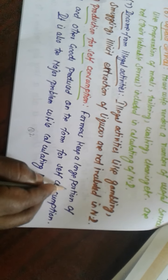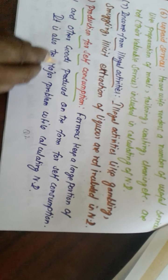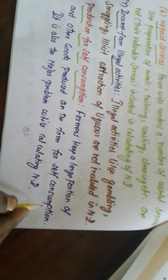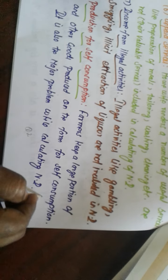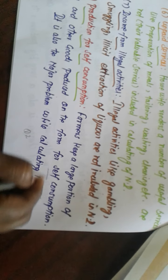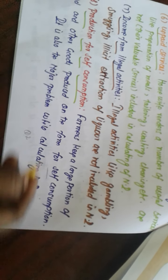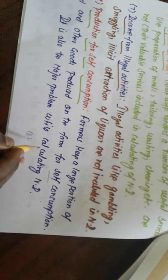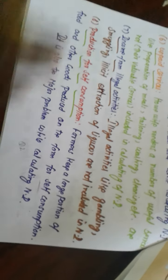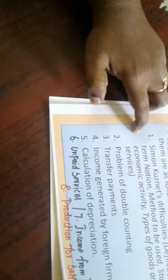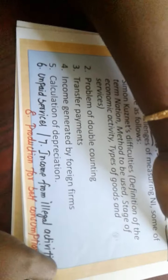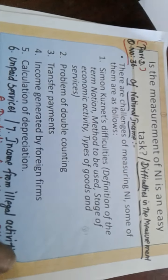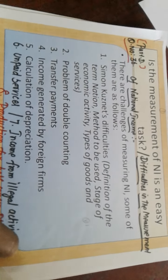Farmers keep a large portion of food and other goods produced on the farm for self-consumption for their own family needs. This is also a major problem while calculating national income. These are all the main important problems — or difficulties — in the measurement or calculation of national income.